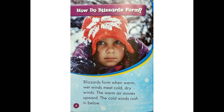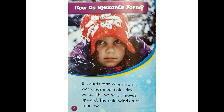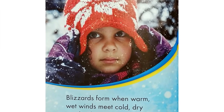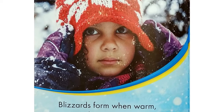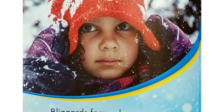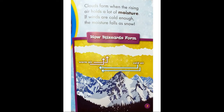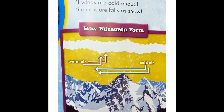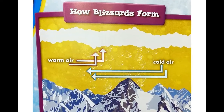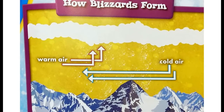How do blizzards form? Blizzards form when warm, wet winds meet cold, dry winds. The warm air moves upward. The cold wind rushes in below. Clouds form when the rising air holds a lot of moisture. If winds are cold enough, the moisture falls as snow.